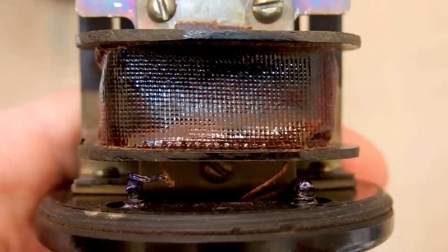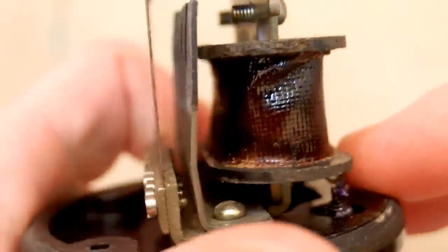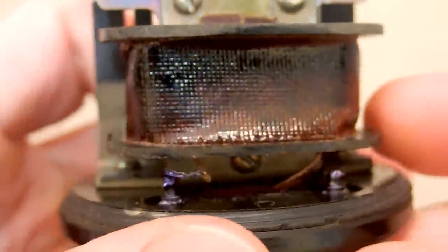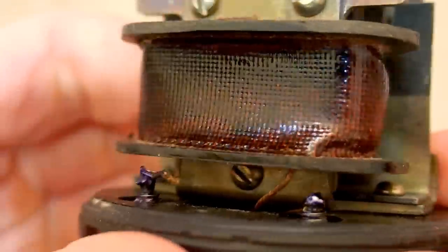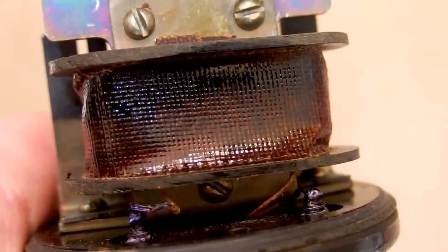But unfortunately this coil looks rather dark. It looks like it overheated. I'm not sure if it's supposed to be this dark, almost black. But because it's open circuit it's probably gone.